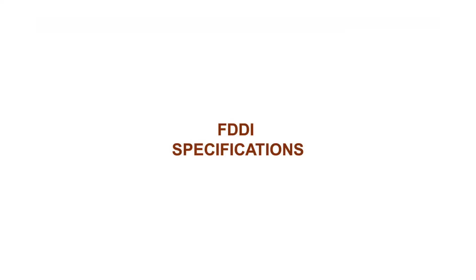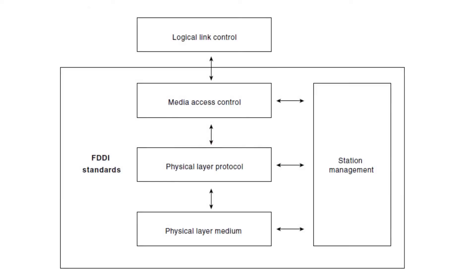FDDI specifies the Physical and Media Access portions of the OSI Reference Model. FDDI is not actually a single specification, but a collection of four separate specifications, each with a specific function. Combined, these specifications provide high-speed connectivity between upper-layer protocols, such as TCP/IP and IPX, and media such as fiber-optic cabling.